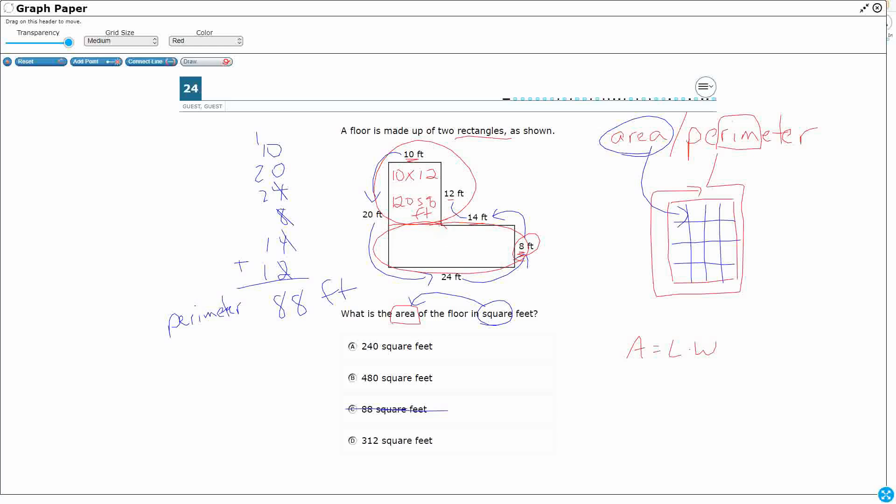I don't want to use this 14 because the 14 doesn't go over far enough. It's gonna be this 24. 8 and 24. So you have to find the measurements that represent the length and the width. Okay, so 8 times 24.